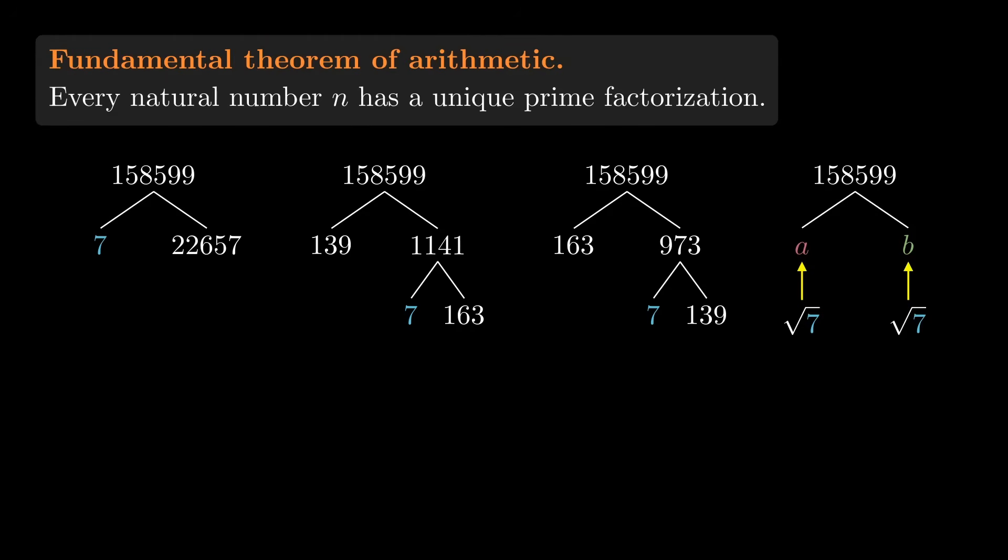I know it feels like this can't happen. But that's your intuition, built up from years of experience working with numbers and never seeing a situation where it does. And your intuition is right, but that's not the reason. We need to show that the contents of 7 can't get spread out. That it's either in one factor or the other.